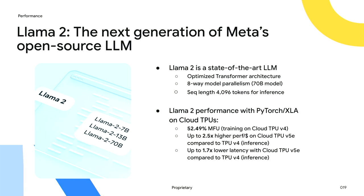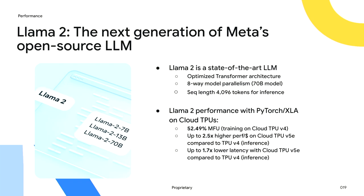Llama 2 is the next generation of Meta's open-source large language models. It uses an optimized transformer architecture ranging from 7 to 70 billion parameters. The largest 70 billion parameter model uses 8-way model parallelism, and all model sizes use sequence lengths of up to 4,096 tokens for inference. Llama 2 is a state-of-the-art large language model that really puts AI accelerators to the test. On training, Cloud TPU achieved up to 52.5% model flops utilization — a key efficiency metric we'll unpack further.